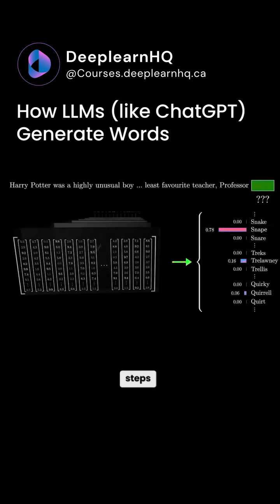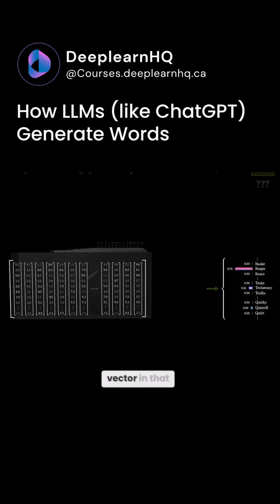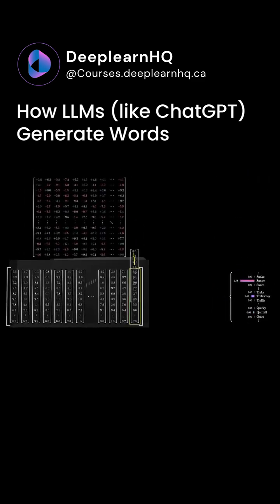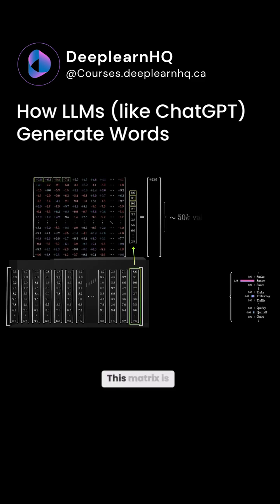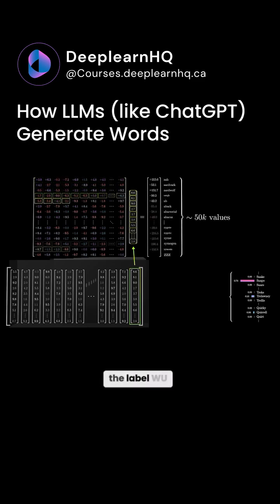This involves two different steps. The first one is to use another matrix that maps the very last vector in that context to a list of 50,000 values, one for each token in the vocabulary. This matrix is called the un-embedding matrix and we give it the label Wu.